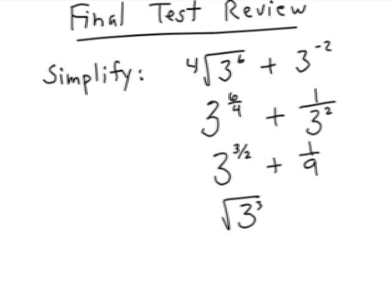Remember that the assumed index is a 2. It's a common radical so we don't write the 2. Well, what is 3 to the 3rd power? That of course would be 27. Radical 27 plus 1 9th. A few more steps.